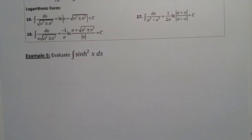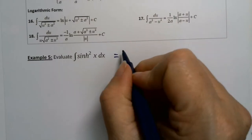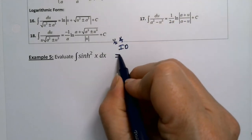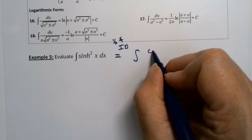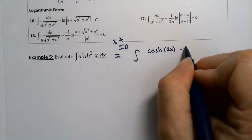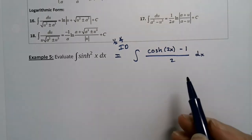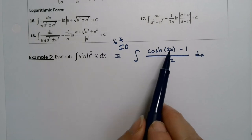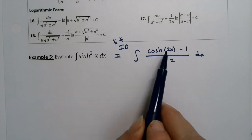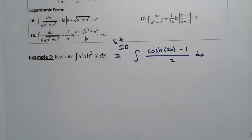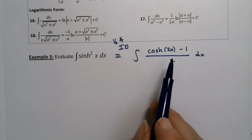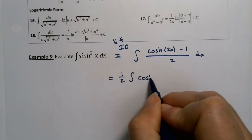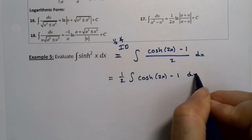That's what I'm going to use — from the identity, it's actually a half-angle identity if you want to know. So this becomes the integral of (cosh(2x) − 1) / 2. It's called a half-angle identity not because of the 2x, but because of the x — 2x divided by 2 gets you x, so you had half of this angle to begin with.